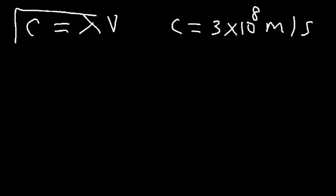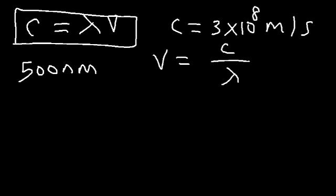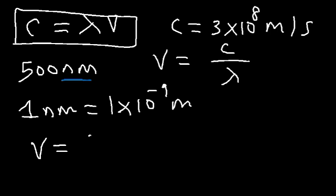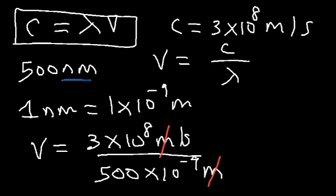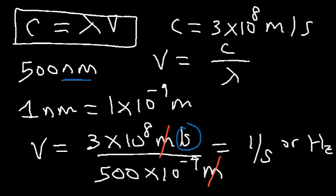Let's use the first equation. If you have a wavelength of 500 nanometers, what is the frequency? Frequency ν = c / λ. Notice the wavelength is in nanometers and must be converted to meters: 1 nanometer = 1 × 10⁻⁹ meters, so 500 nanometers = 500 × 10⁻⁹ meters. The unit meters cancels, leaving units of 1/second, which is hertz. Dividing the speed of light by the wavelength gives a frequency of 6 × 10¹⁴ hertz.